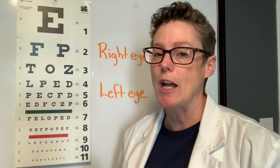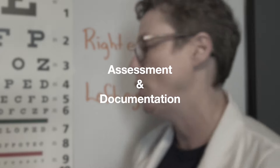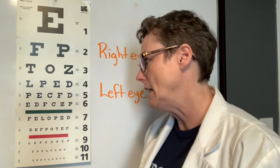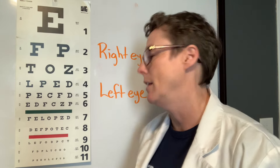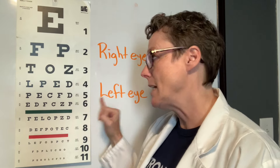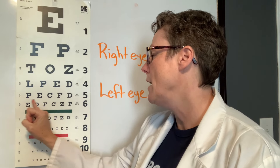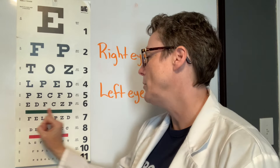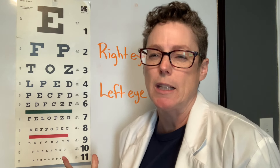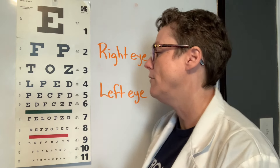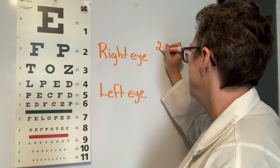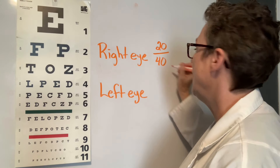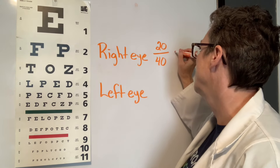When it comes to determining the value to assign for the patient's visual acuity, the patient can make two errors on a line and still get credit for that line. If they make more than two errors or are unable to read the next line, that is where we stop. In this case, the patient was able to read line 5 with one error but was unable to attempt line 6, and showed signs of squinting and leaning forward. So we give credit for line 5, which is 20 over 40, with a minus 1 for the one error.